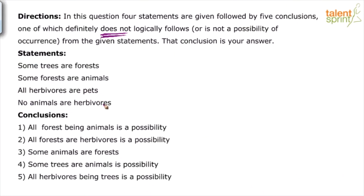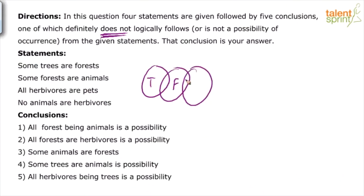Let's draw a diagram for this. I'm sure all of you have gone through the syllogism video and know the method to be followed. So — some trees are forests, then some forests are animals. Now the third statement says all herbivores are pets, but so far in our diagram we have neither herbivores nor pets — it's only about trees, forests, and animals.